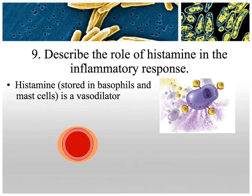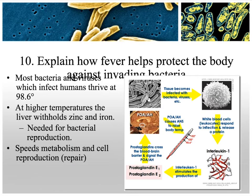Histamine is a vasodilator. Basophils release histamine, which causes dilation of blood vessels. Fever, though uncomfortable, is helpful — when your body releases pyrogens it resets the thermostat in your hypothalamus. Most bacteria and viruses prefer 98.6°F, so raising the temperature takes away their ideal environment. At higher temperatures, your liver holds onto zinc and iron, which bacteria need to reproduce, stopping their reproduction. Higher temperatures also cause your cells to reproduce faster, speeding tissue repair.